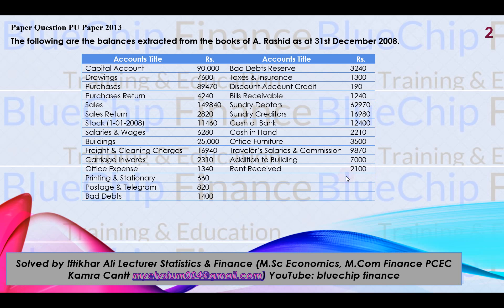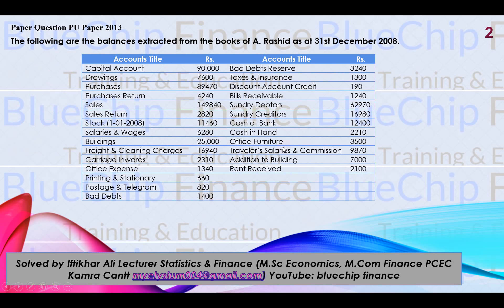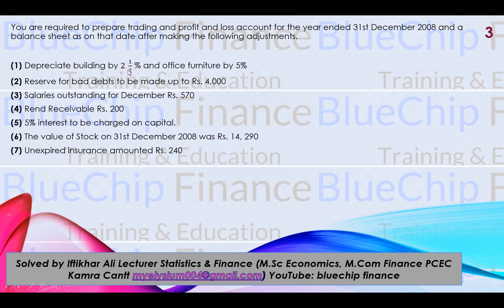A simple tip: direct expenditure goes to the debit side of the Trading Account; direct revenue goes to the credit side of the Trading Account. Indirect expenditure goes to the debit side of the Profit & Loss Account; indirect revenue goes to the credit side of the Profit & Loss Account. Now for adjustments: depreciate Building by 2.5% and Office Furniture by 5%. The depreciation amounts are indirect expenses on the debit side of the Profit & Loss Account. Building is 25,000 and Office Furniture is 3,500; when placing these in the Balance Sheet, subtract the respective depreciation from each.